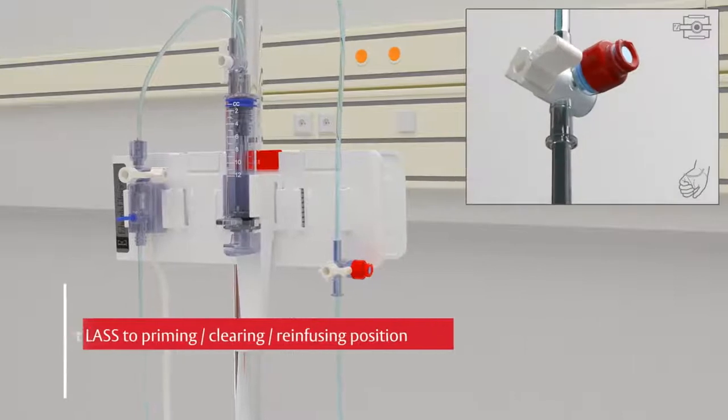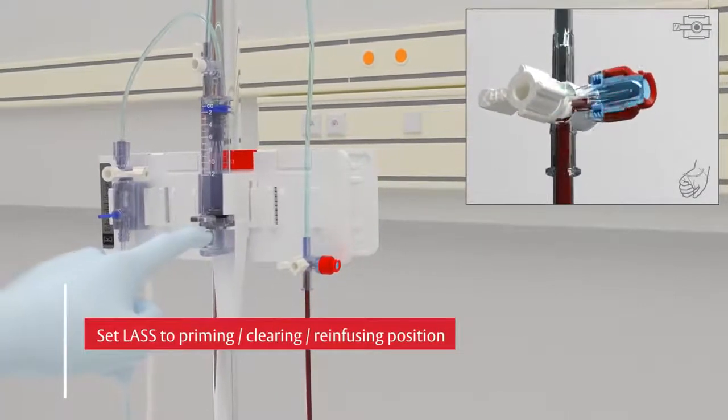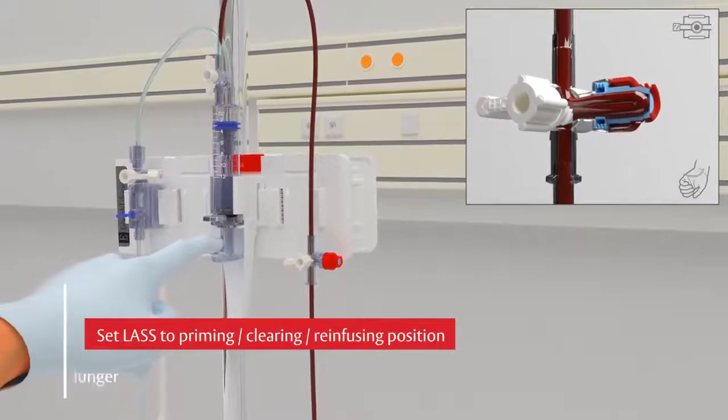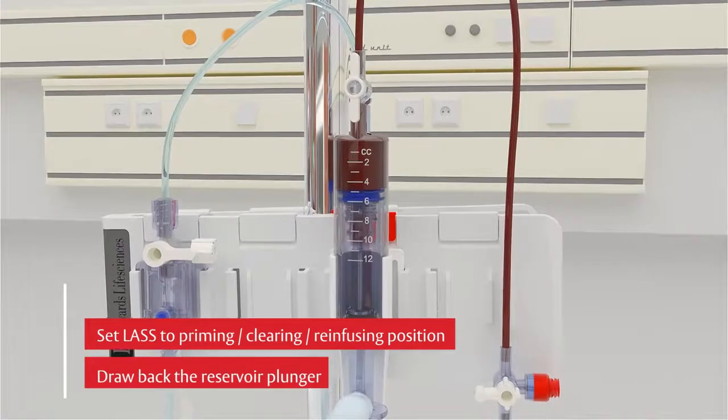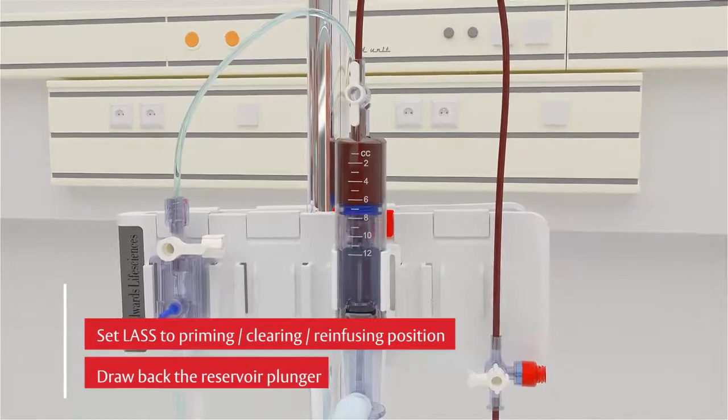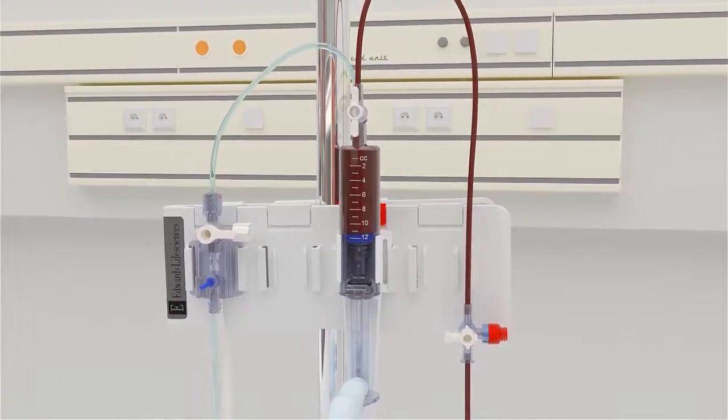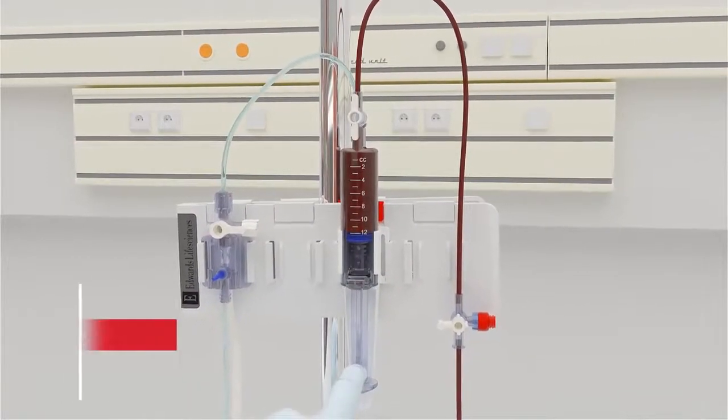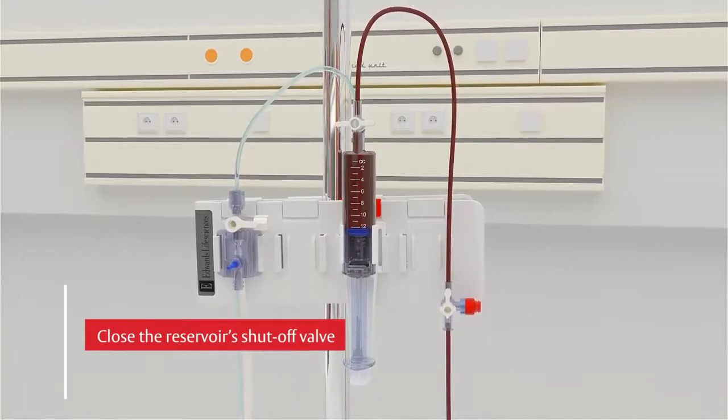The first step is to position the sample site into the priming clearing re-infusing position. Next, release the plunger latch and smoothly draw back on the reservoir plunger until the plunger stops at its 12 milliliter volume capacity. The recommended draw rate is one milliliter per second. When the volume has been drawn, close the shutoff valve by turning the handle perpendicular to the tubing.